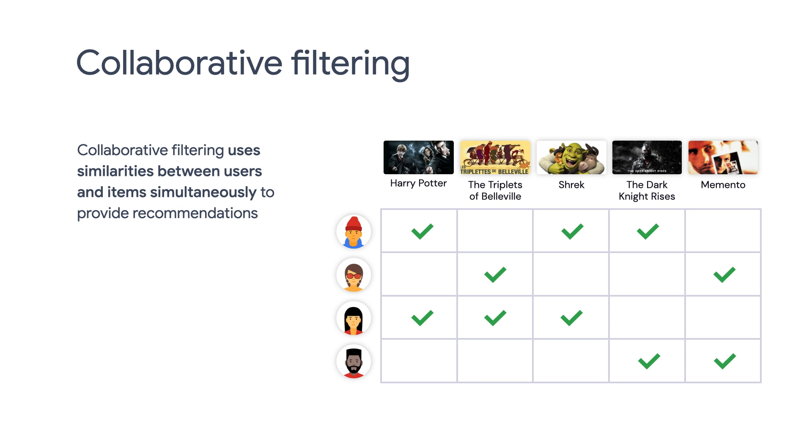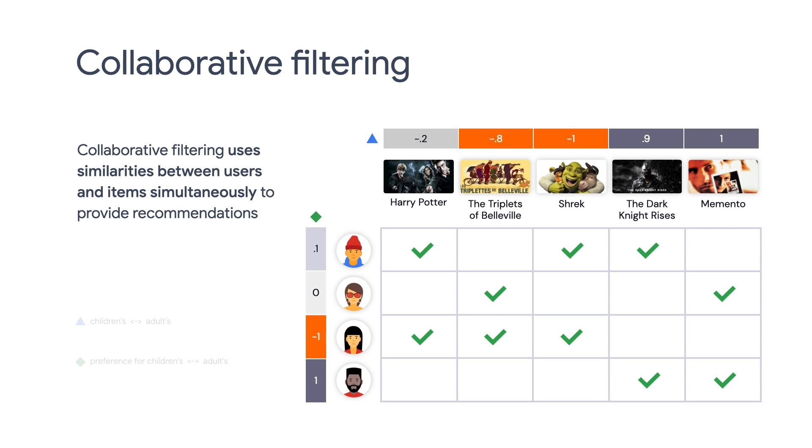But how do we do this in practice? Let's say we can assign a value between minus one to one to each user, indicating their interest level for children's movies. Minus one means highest level of interest for children's movies, and one means no interest at all. In this case, user number three likes children's movies a lot, and user number four doesn't like children's movies at all. We can also assign a value between minus one to one to each movie. Minus one means the movie is highly suitable for children, and one means it's not for children at all.